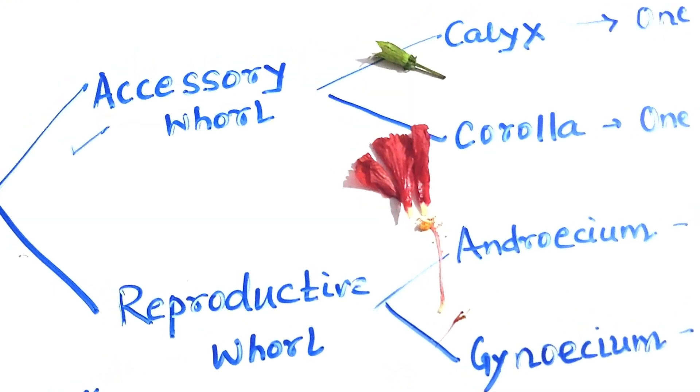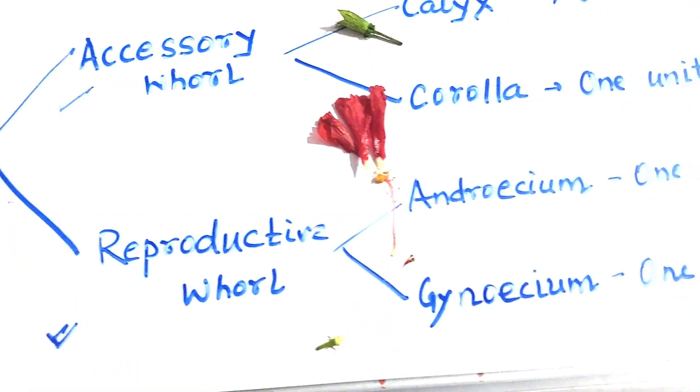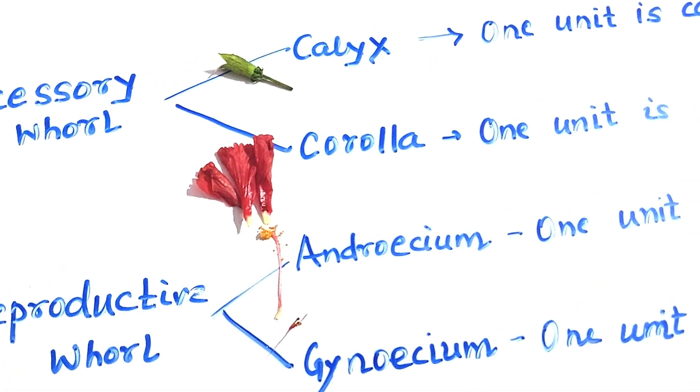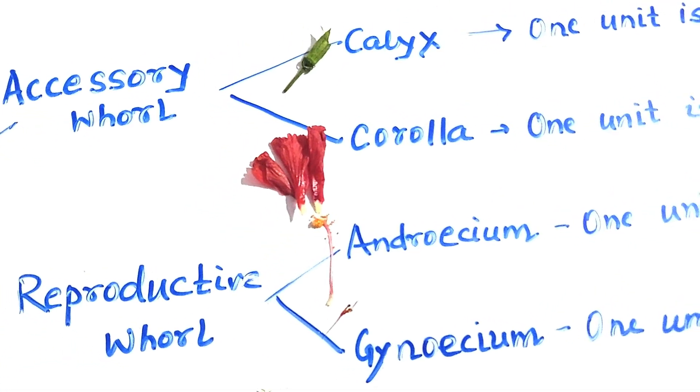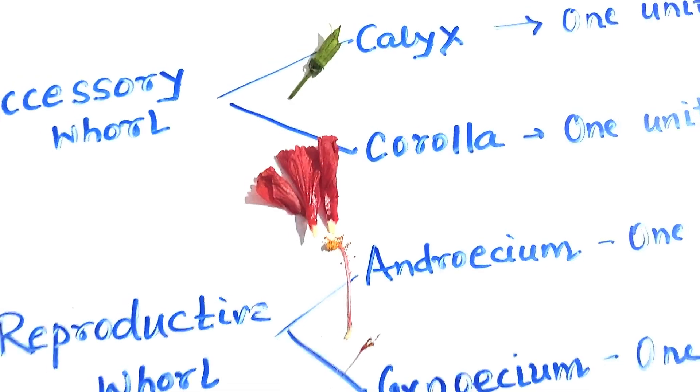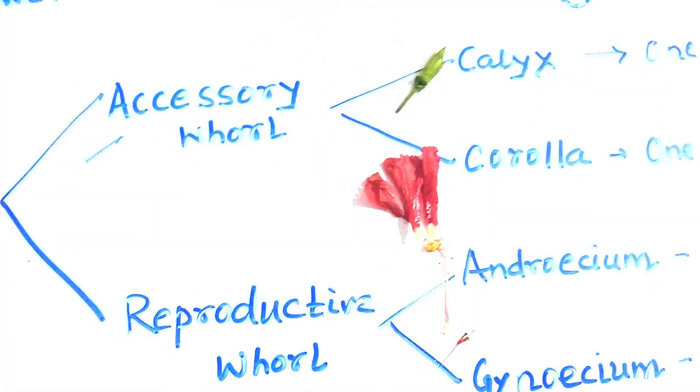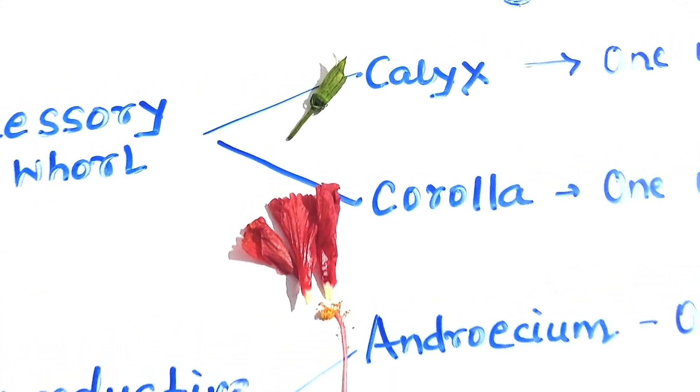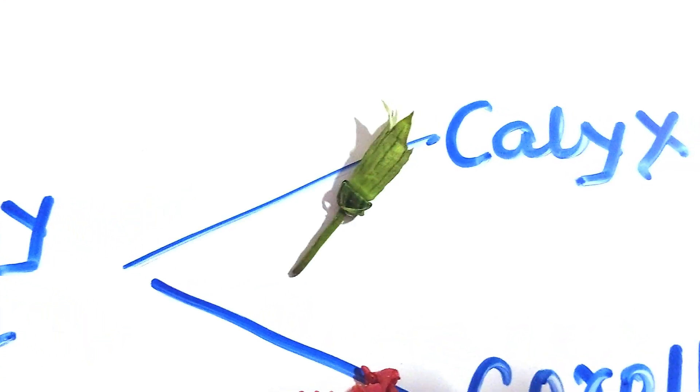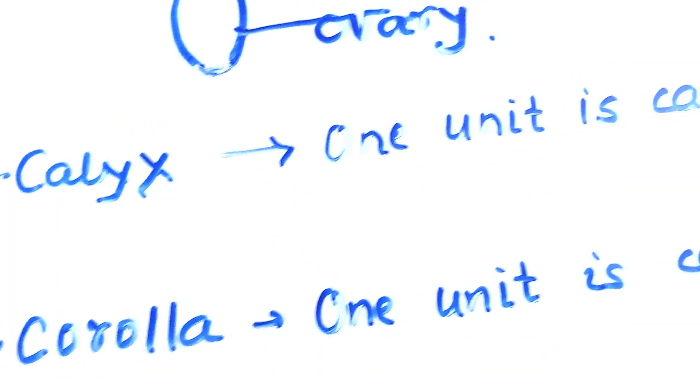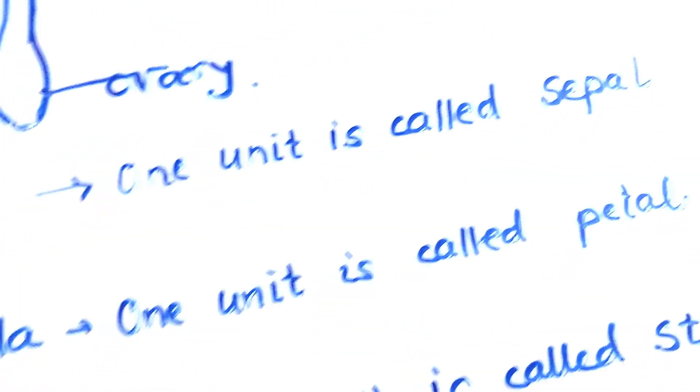You can see the diagram here. This is the calyx that you can see when you take it, and one unit is called a sepal.